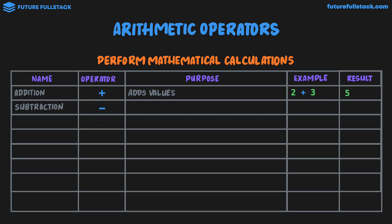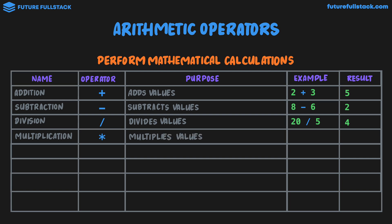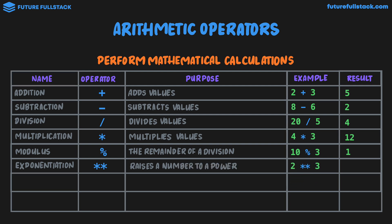We have subtraction, which is the minus sign — this subtracts values. An example is 8 minus 6, which gives us 2. The next operator is division, which in JavaScript we write as a forward slash, and this divides values. An example is 20 divide 5, which gives us 4. Multiplication uses the asterisk symbol and multiplies values — 4 by 3 gives us 12. The modulus operator uses the percentage symbol and calculates the remainder of a division. For example, 10 modulus 3 equals 1, because 3 goes into 10 three times with a remainder of 1. Finally, exponentiation uses two asterisks and raises a number to a power — 2 to the power of 3 equals 8, that is 2 multiplied by itself three times.